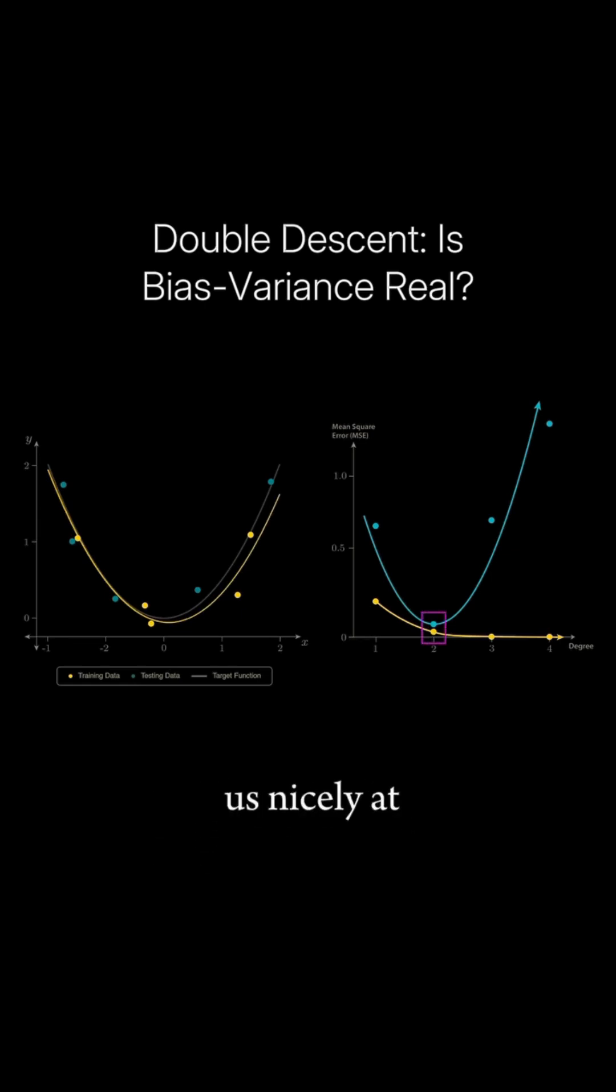and this puts us nicely at the bottom of our bias variance curve. When we reach a fourth order polynomial, our test error continues to increase and our training error goes to zero.